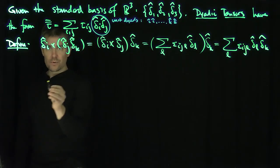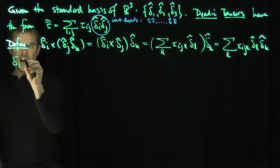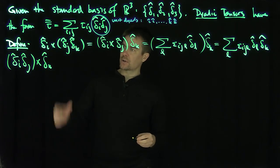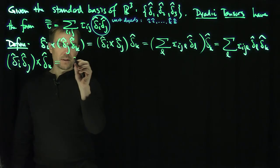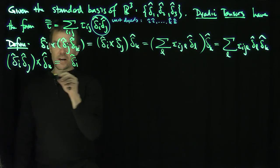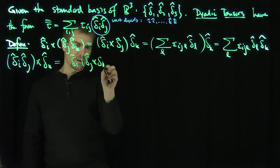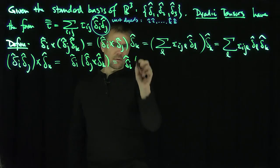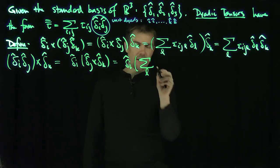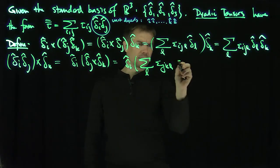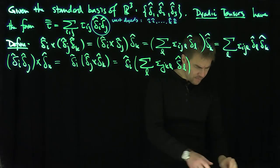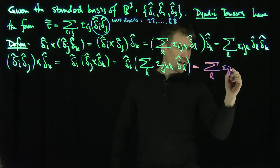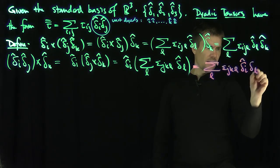We'll use linearity to do the rest, and let's do it in the opposite order. If I had (delta_i delta_j) cross delta_k, because order matters in these operations, I do delta_i times (delta_j cross delta_k). So this gives me delta_i-hat times the sum over l of epsilon_jkl times delta_l-hat, which equals the sum over l of epsilon_jkl times delta_i-hat delta_l-hat.